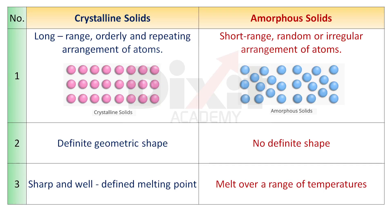Distinguish between crystalline solids and amorphous solids. Point number 1. Crystalline solids show long range, orderly, and repeating arrangement of atoms. Amorphous solids show short range, random or irregular arrangement of atoms.